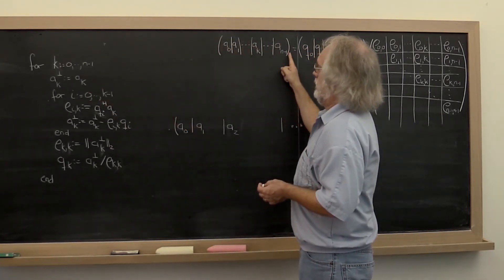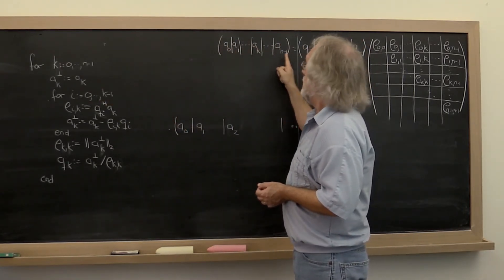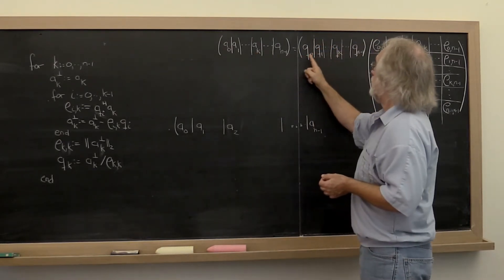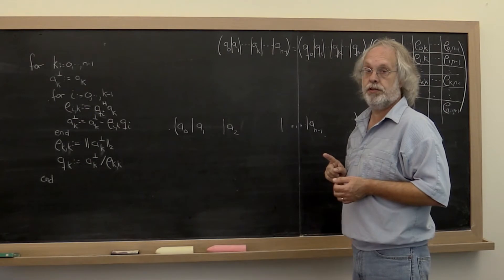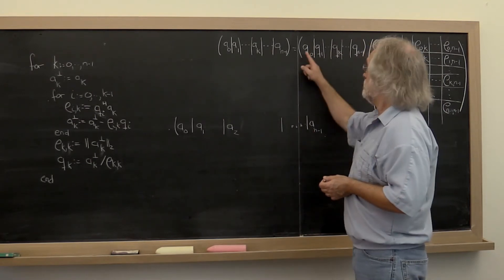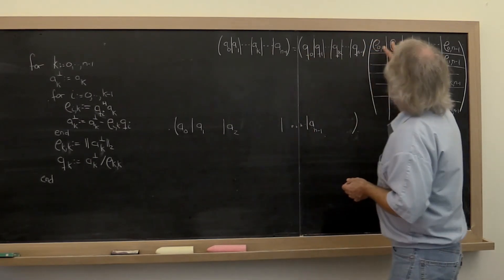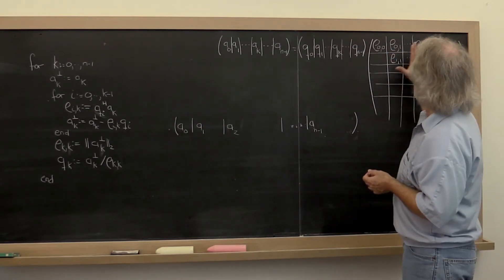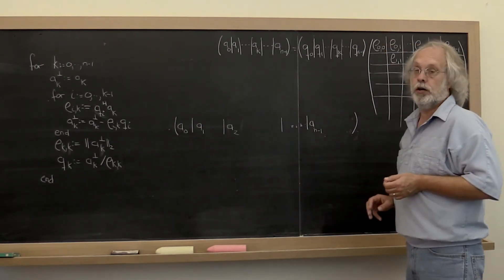We march over all of the columns of A. When we get to Ak we will assume that we have already computed all of the previous columns of Q and that we have computed a big part, the top left part, so to say, of matrix R.